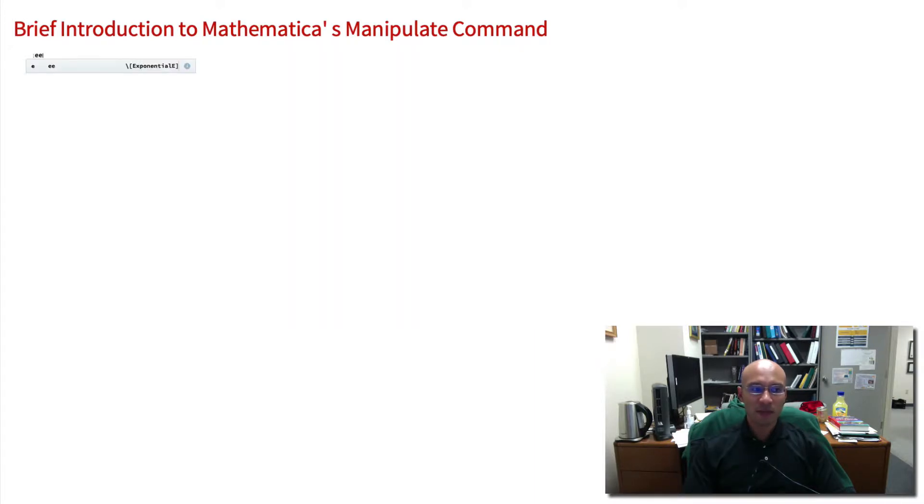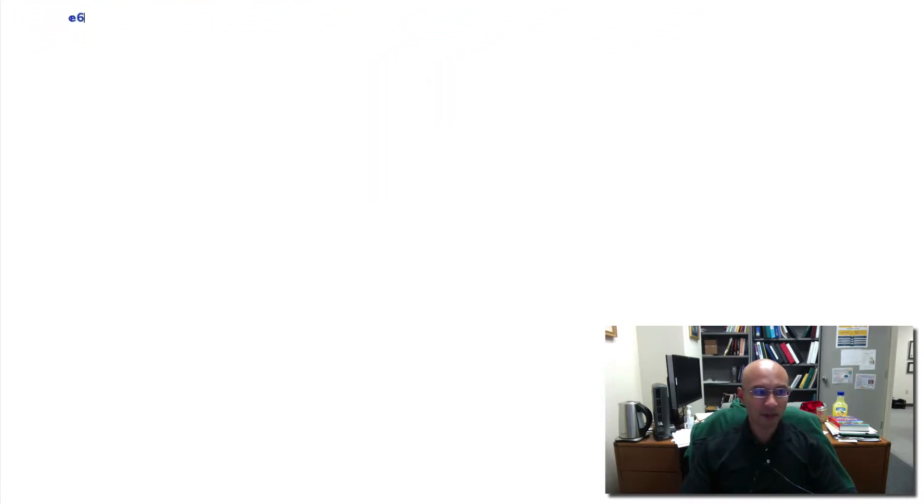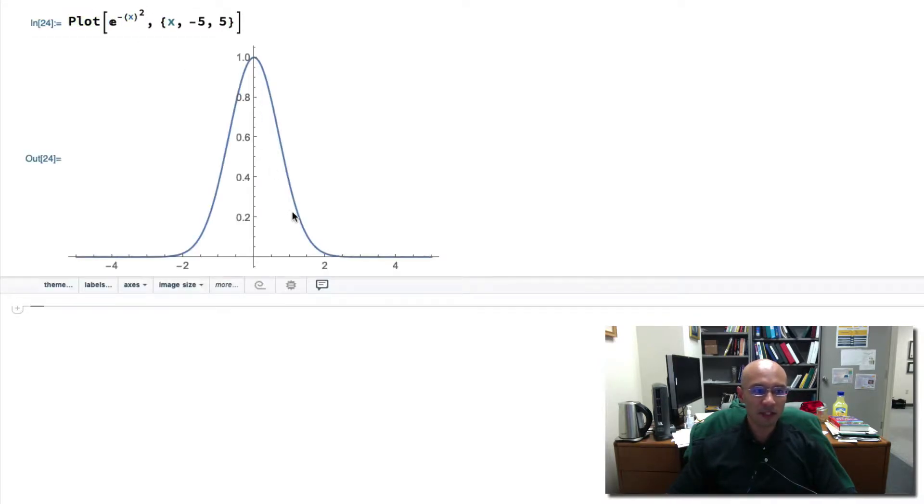I'll put in here the Gaussian, and let's make this bigger. So let's put in an equation for a Gaussian, and we're going to plot this, so I enclose it in the plot command, and I'm going to specify x should go from negative 5 to 5, and let's really make this a Gaussian. So here's a Gaussian.